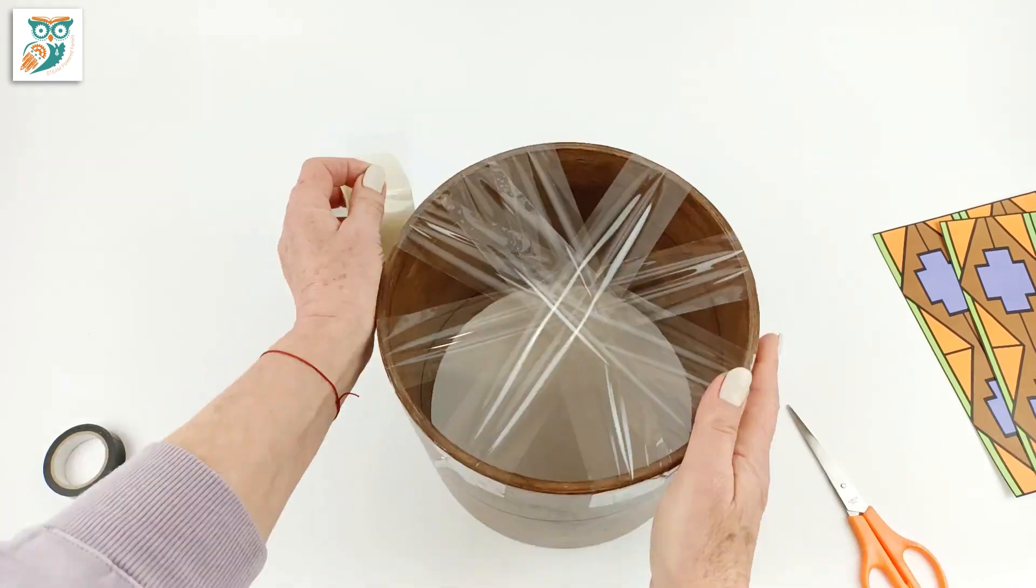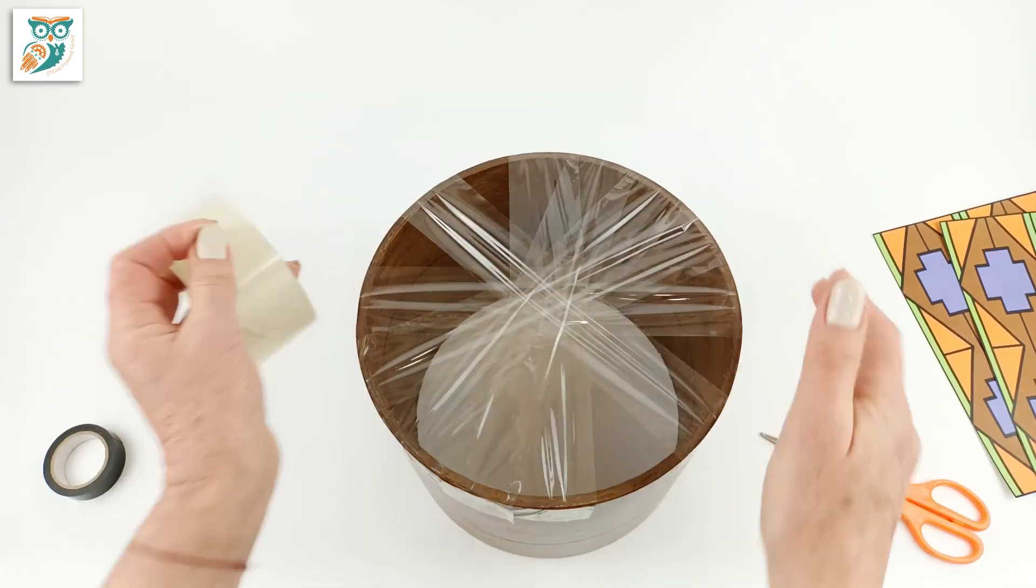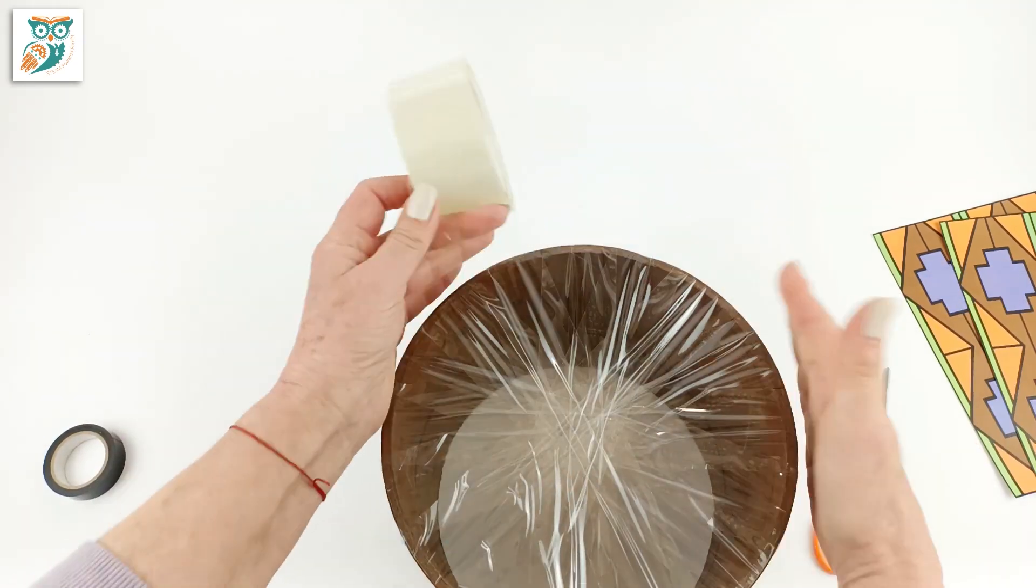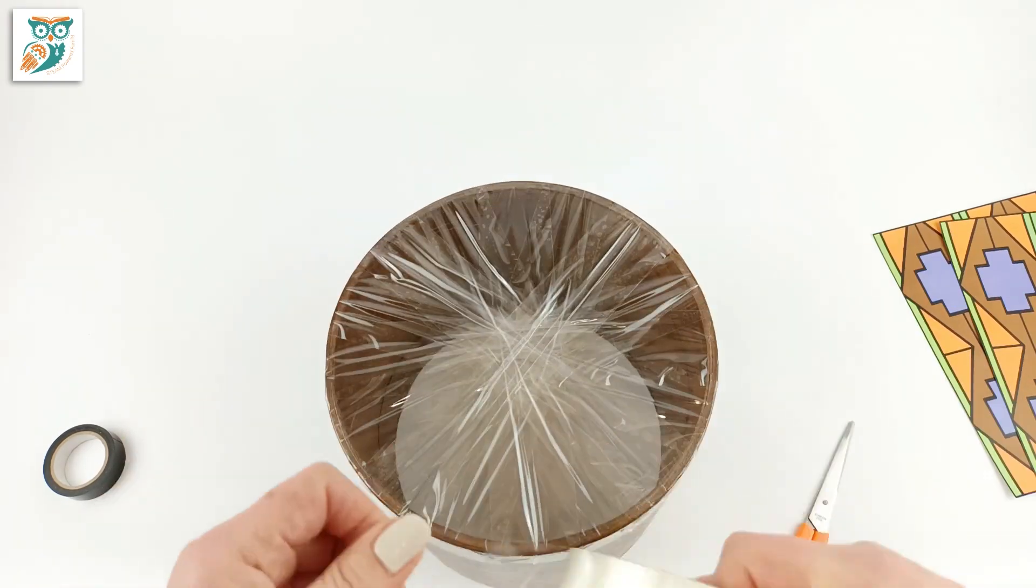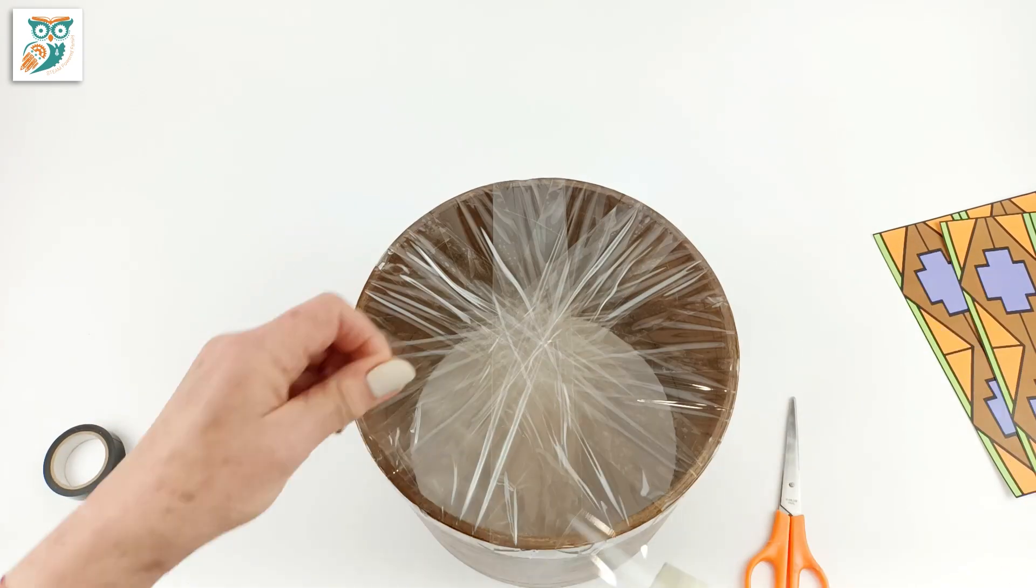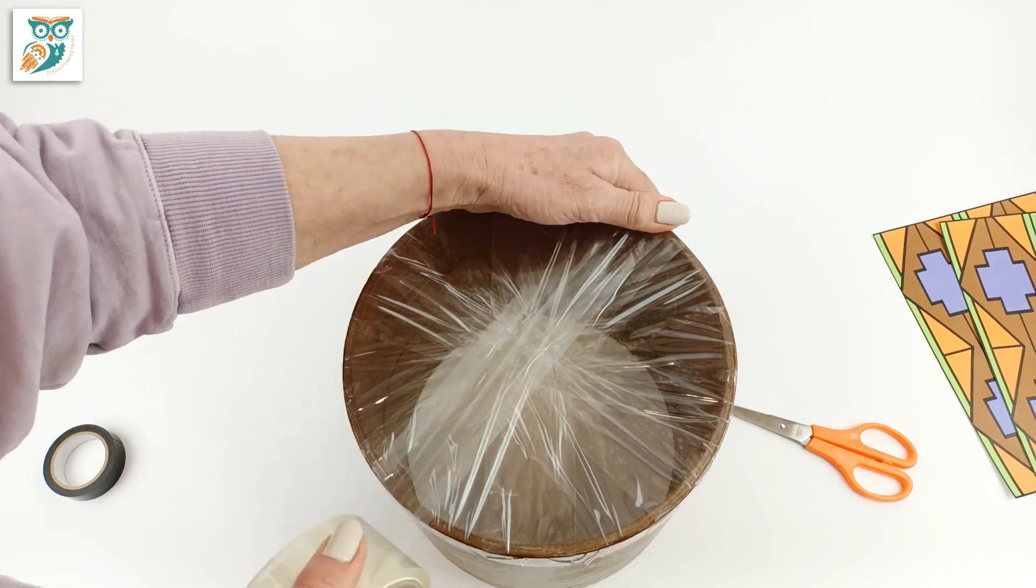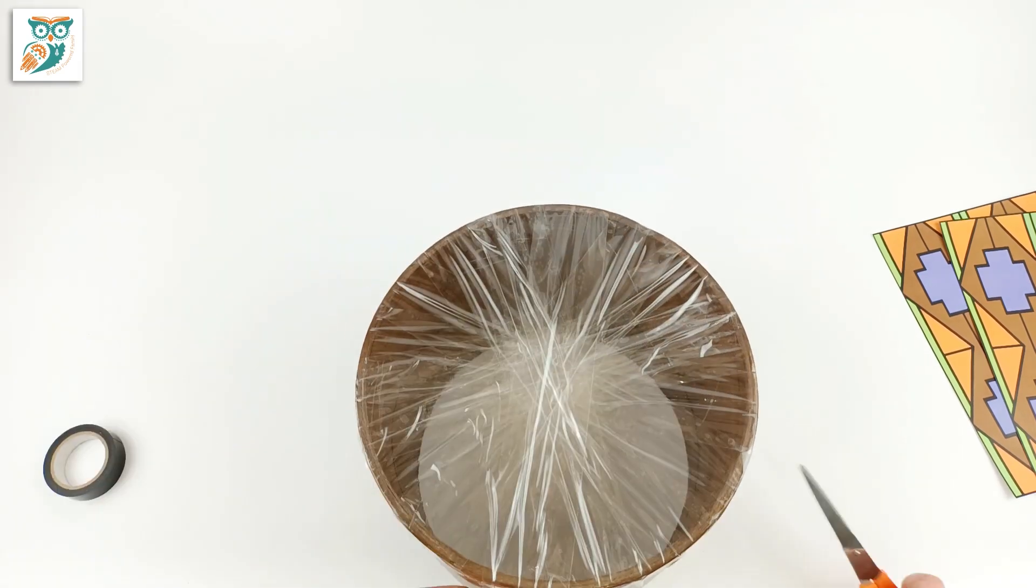You're going to want to do it in this pattern so that you end up with a solid top skin all the way across. Once you've done one layer, we're going to go through again and do a second layer. Each time you put the tape down, make sure that you're stretching it really well and getting it nice and taut.